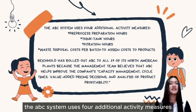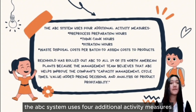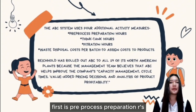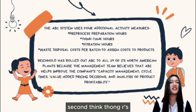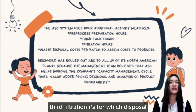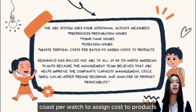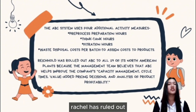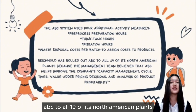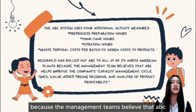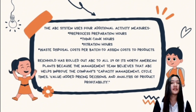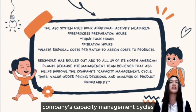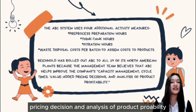The ABC system uses four additional activity measures: pre-process preparation hours, think tank hours, filtration hours, and waste disposal cost per batch to assign costs to products. Richhold has rolled out ABC to all 19 of its North American plants because the management team believes that ABC helped improve the company's capacity management, cycle time, value-added pricing decisions, and analysis of product profitability.